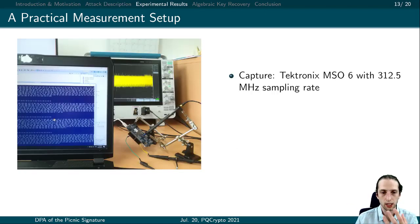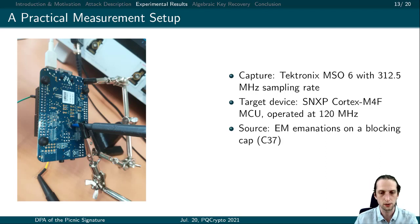First, we would like to introduce our practical setup. In this picture, you can see an overview of our setup. Our capturing device is a Tektronix MSO6 with 20.5 gigasamples per second sampling rate. As our target device, we used a Freedom Board with Cortex-M4 clocked at 120 MHz. As our side-channel source, we chose a blocking capacitor, as seen in the picture, and placed the electromagnetic probe close to this point. We chose this because this capacitor represents the power consumption best.